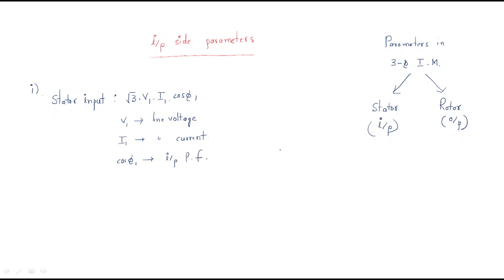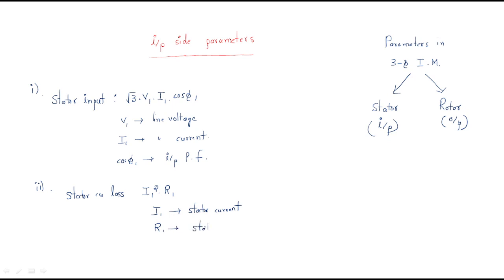On the stator side we also have the stator copper loss. The stator copper loss equals I1 squared times R1, where I1 is the stator current and R1 is the stator resistance — the resistance of the supply field winding.